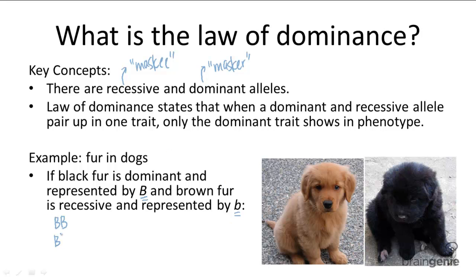It's obvious that BB and bb would code for black fur and brown fur respectively, because there's no other allele within the genotype. But Bb would not be a brown and black speckled dog — because we know that black fur is dominant, and because of the law of dominance, Bb will code for black fur in the phenotype.